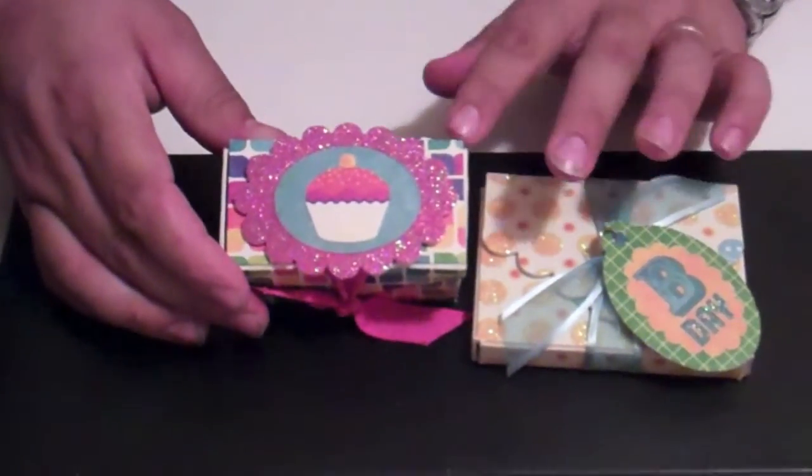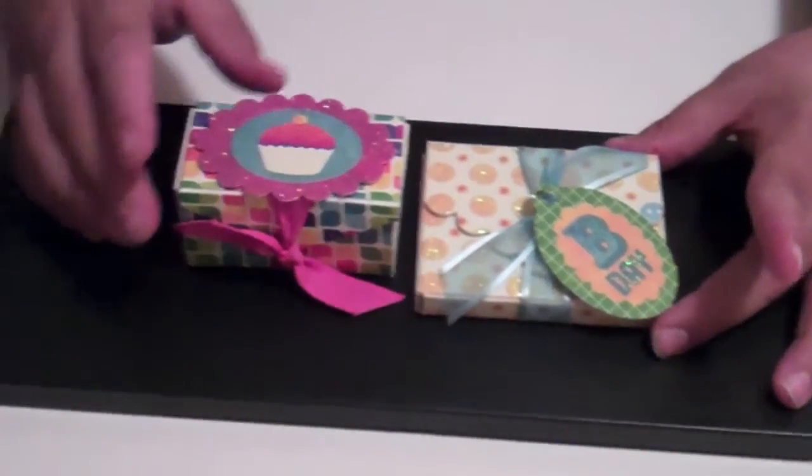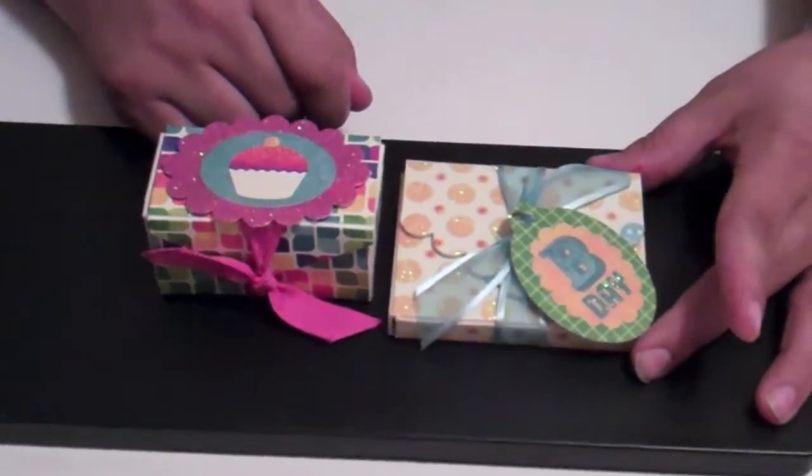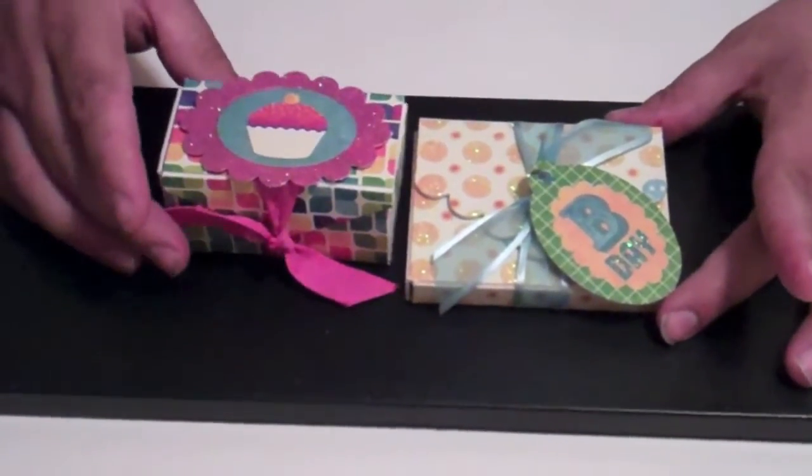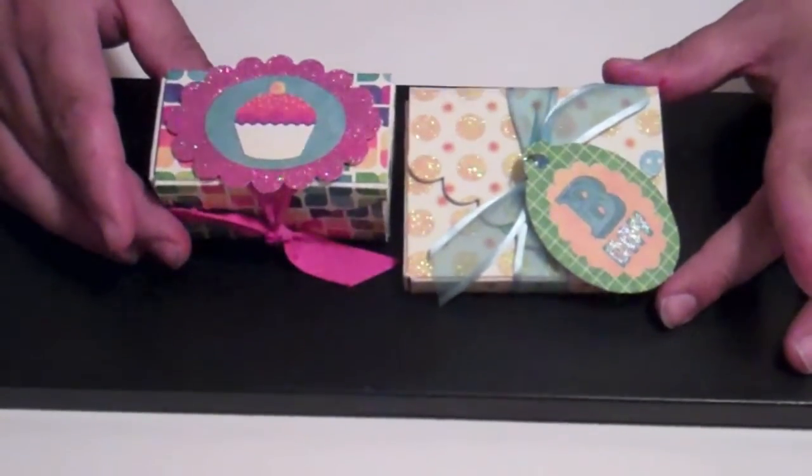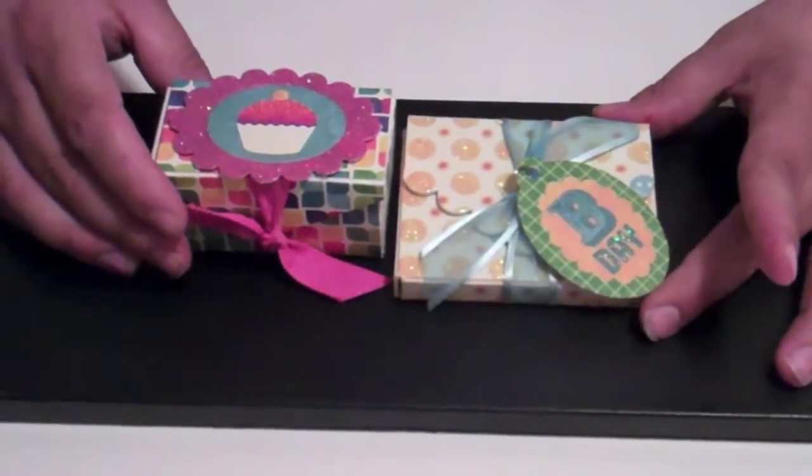maybe some nuggets, some candy, something like that. The paper that I used was from We Are Memory Keepers, called the Funfetti line, and we'll just kind of take it from there.